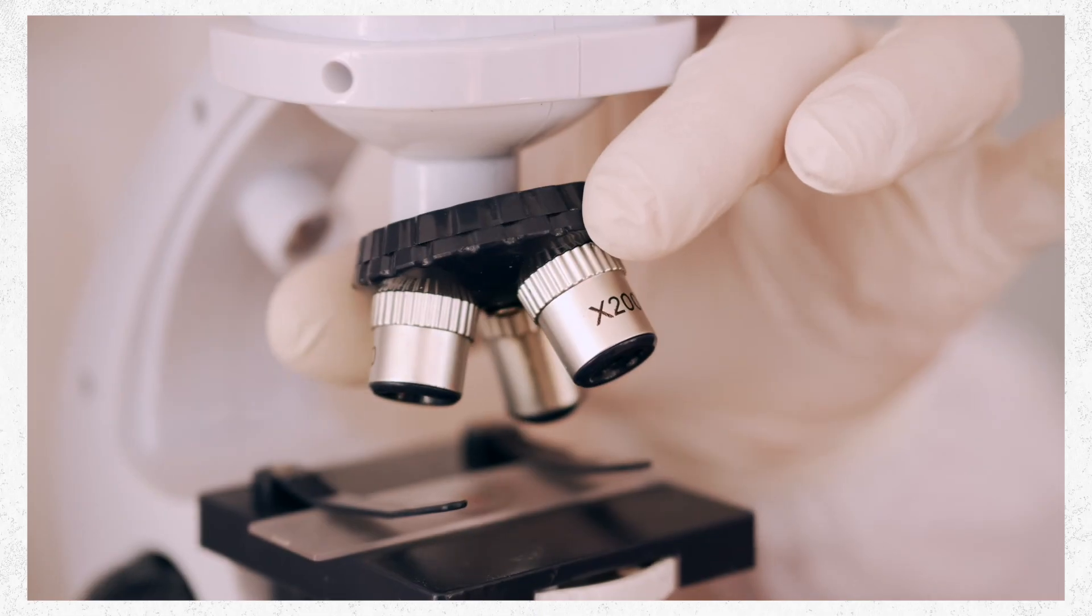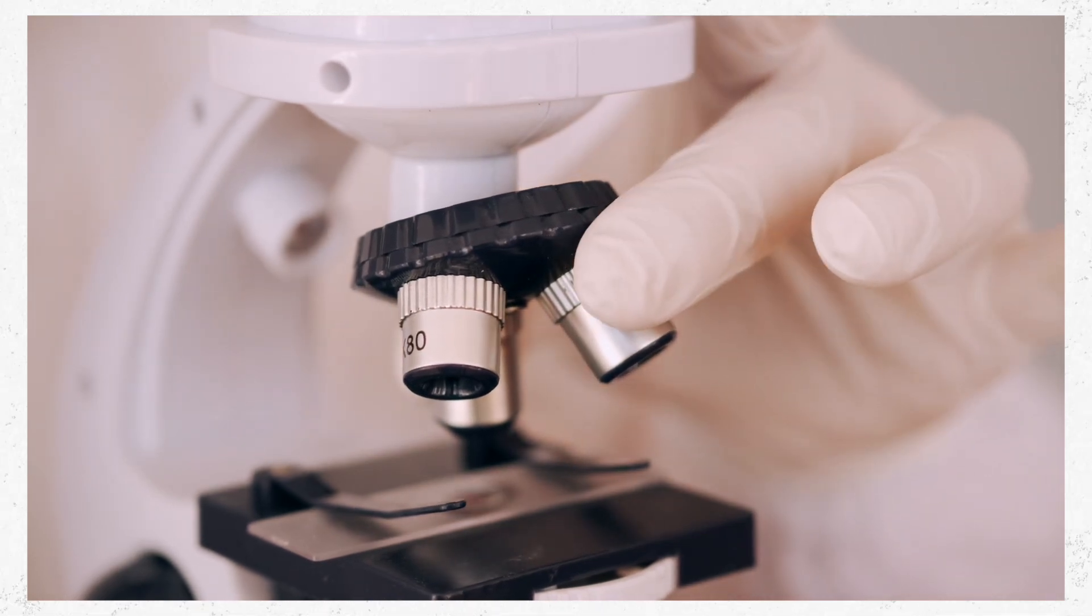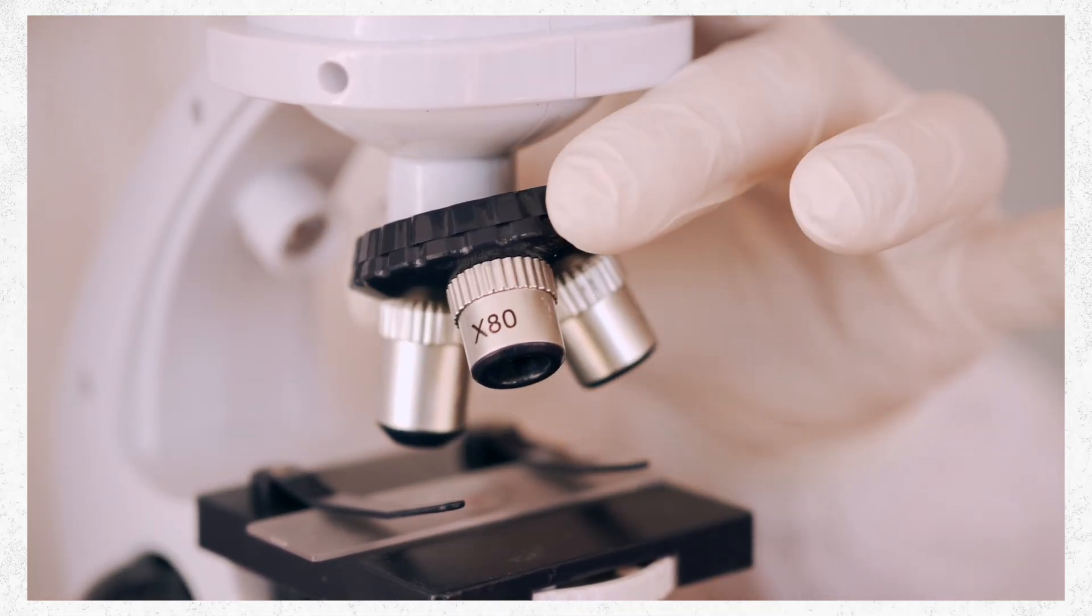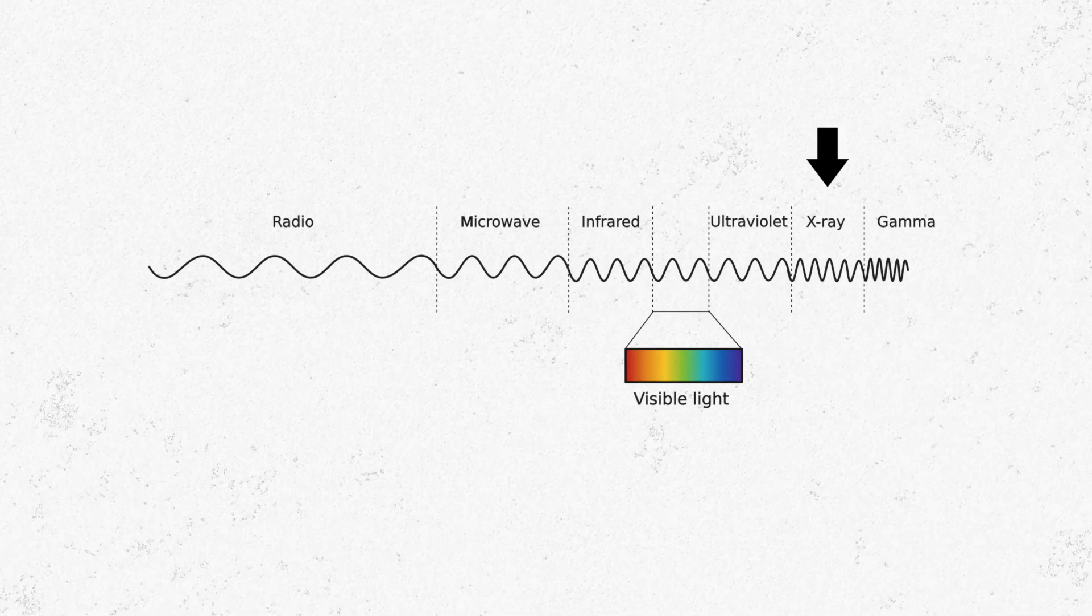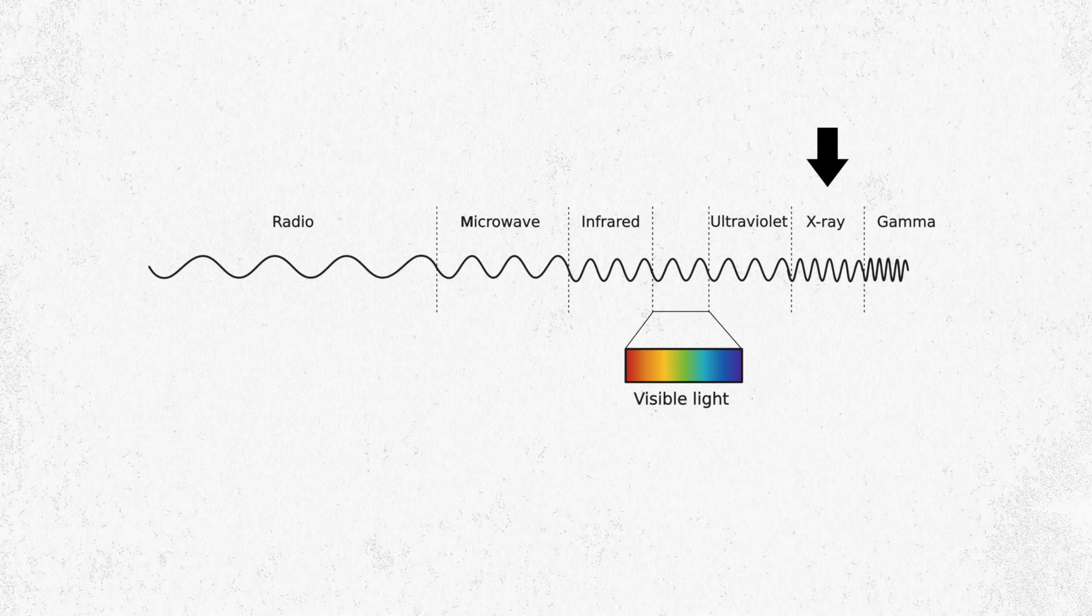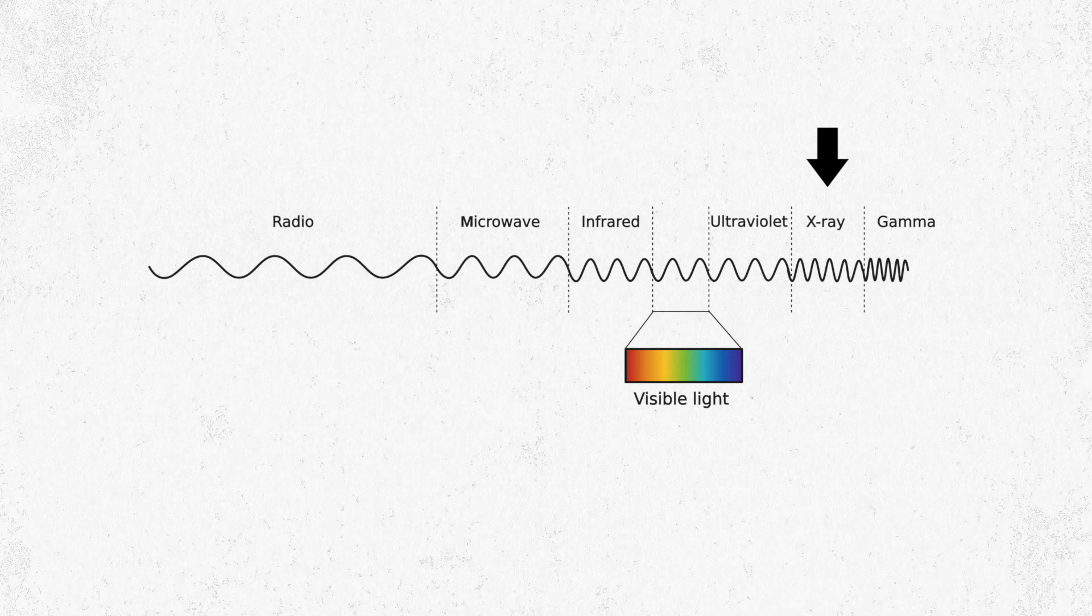Because of this, we simply can't use visible light to see proteins the way we see everyday objects, or even cells under a microscope. Instead, we'll use a type of light with a much shorter wavelength, X-rays. X-rays have a wavelength that is short enough to resolve the distance between individual atoms and proteins.